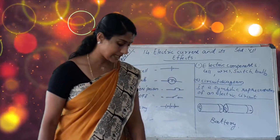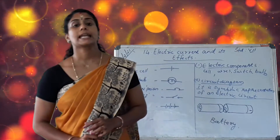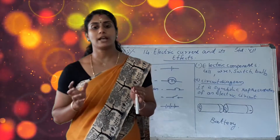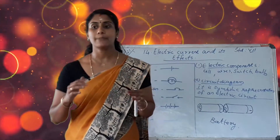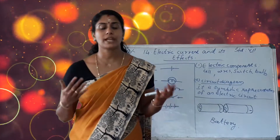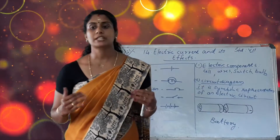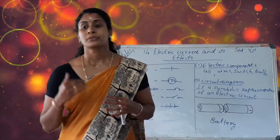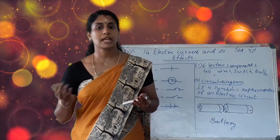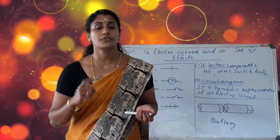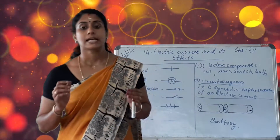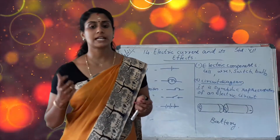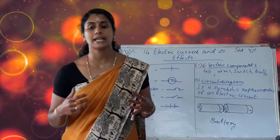Next we study the heating effect of electric current. When an electric current flows through a wire, the wire gets heated — this is the heating effect of electric current. Applications include the electric room heater, electric heater used for cooking, and electric iron. All these contain a coil of wire. When switched on, their element becomes red hot and gives out heat.